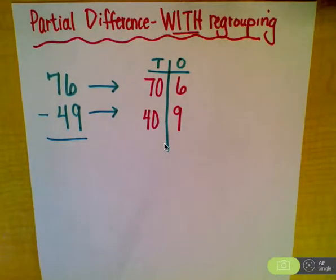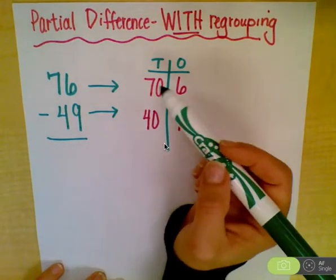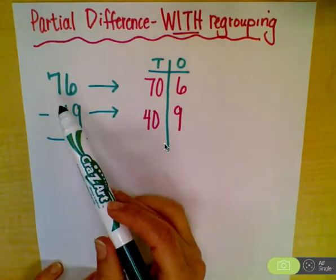We are going to start today with partial difference with regrouping. This is very similar to partial sums and partial difference without regrouping, so I've already set up the problem.